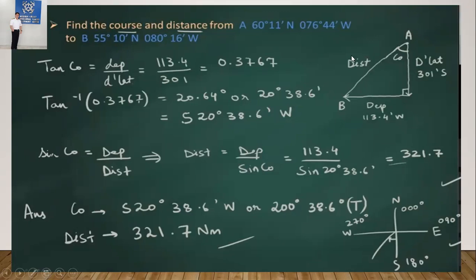Now solve for distance using the sine formula: sine course equals departure over distance. Deriving by cross multiplication: distance equals departure over sine course. So 113.4 divided by sine 20°38.6' equals 321.7 nautical miles. We have now found the course and distance answers.